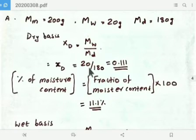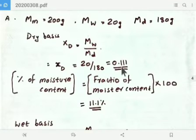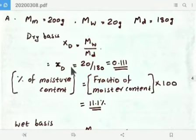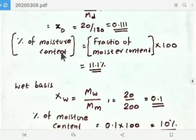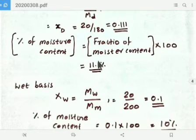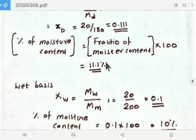On the dry basis, the equation XD equals Mw divided by Md gives us 20 divided by 180, which equals 0.11. This is the fraction of moisture content on dry basis. The percentage of moisture content equals fraction into 100, so 0.11 times 100 gives 11.1 percent.